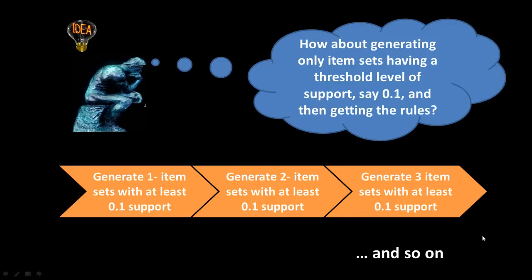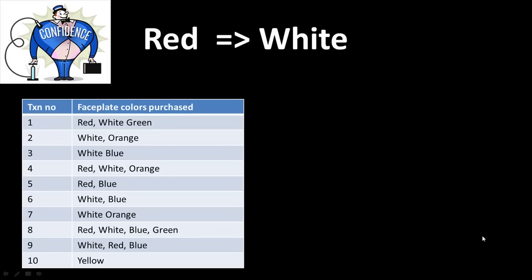Now that we have found a way to enumerate all the good item sets, we start to talk about how do we get the good rules from these good item sets. Taking a concrete example: from the item set {red, white, green}, we can identify a possible rule — if red occurs, so does white. This rule comes from the item set {red, white}, which is a good item set with the required level of support.